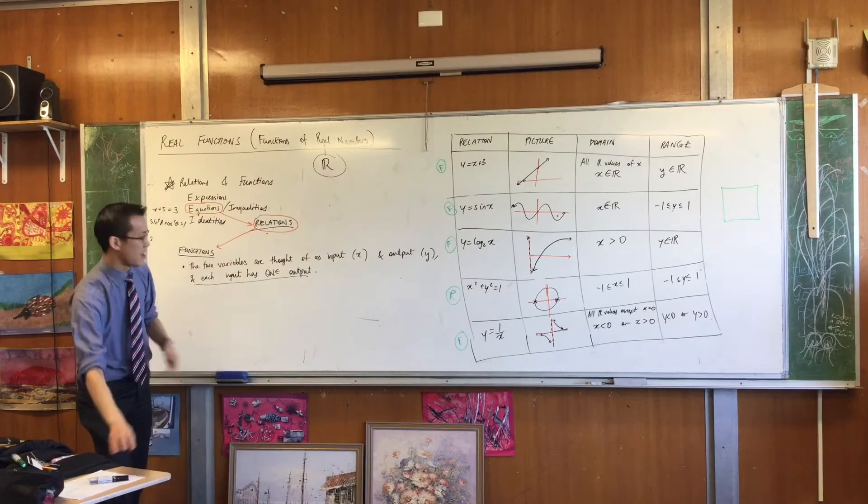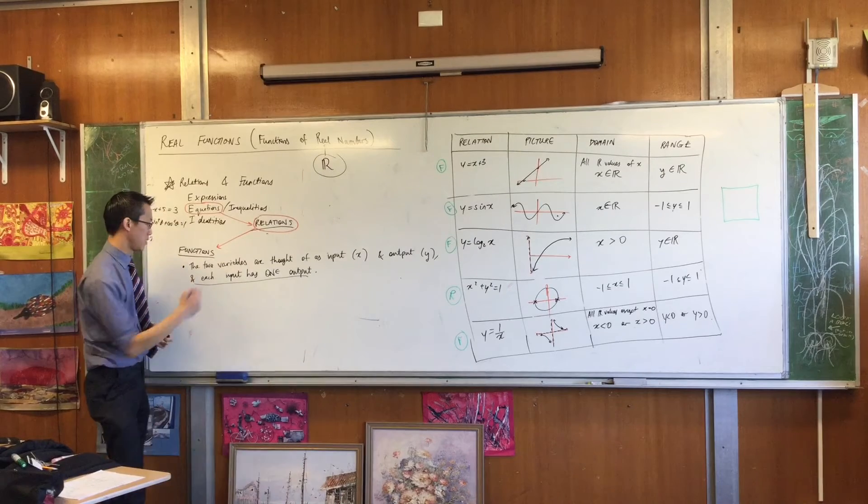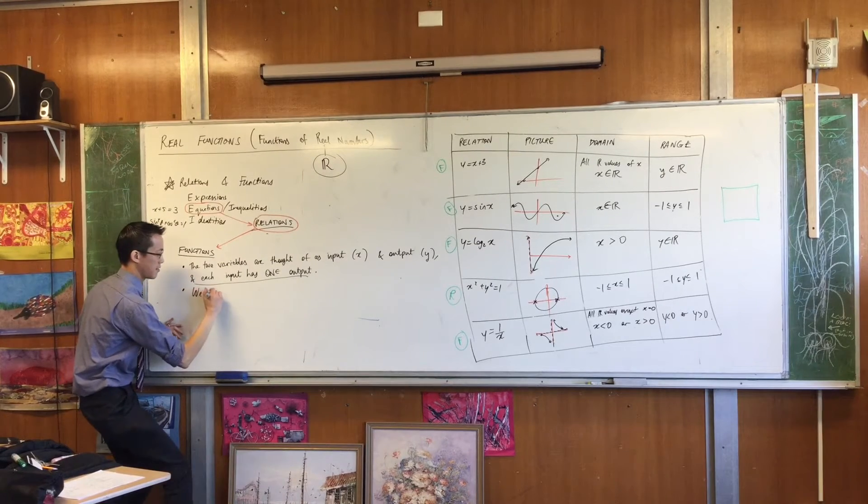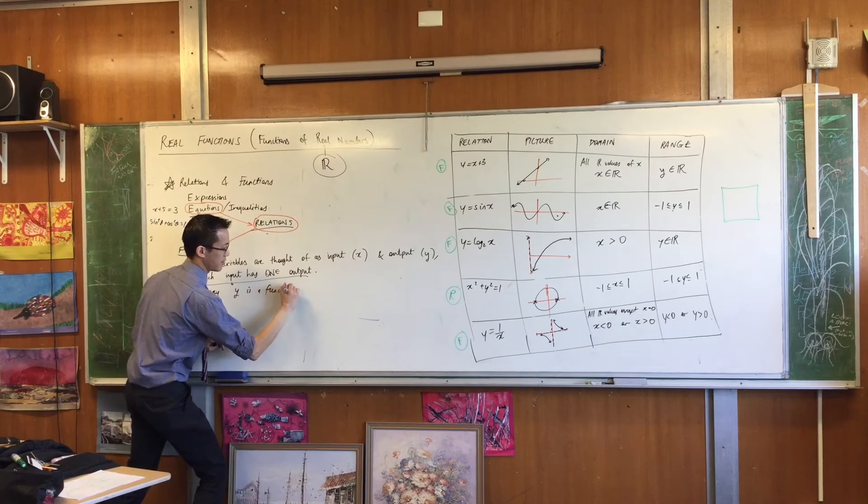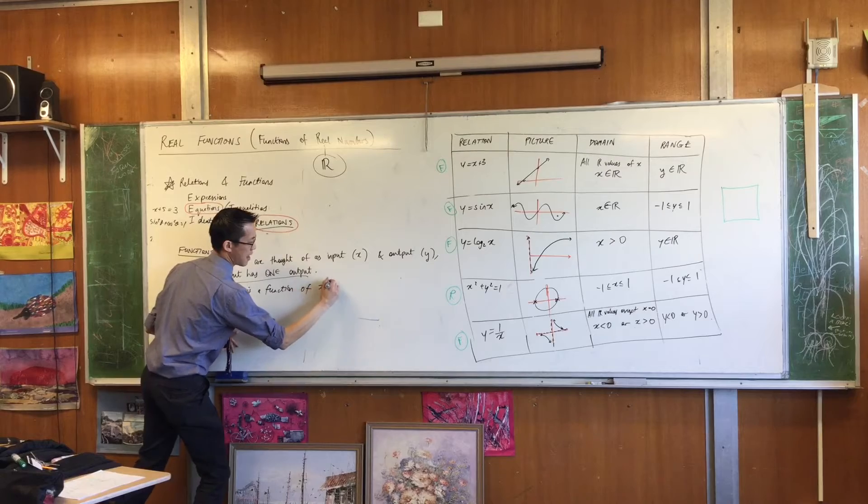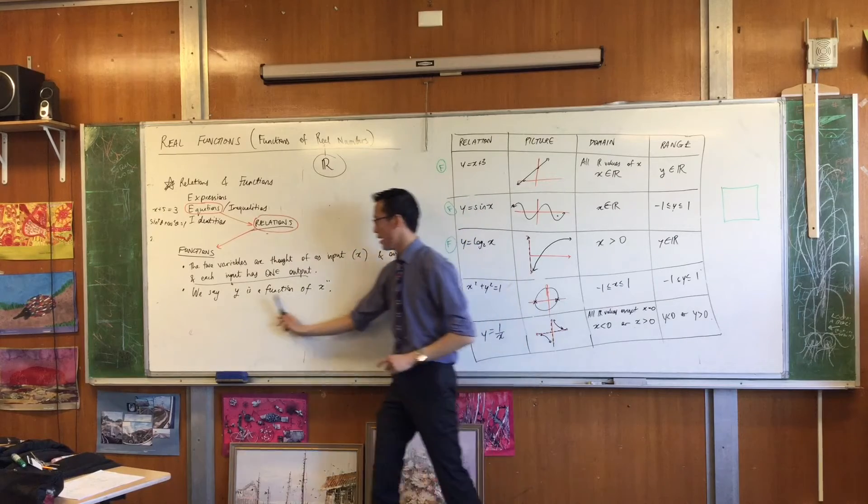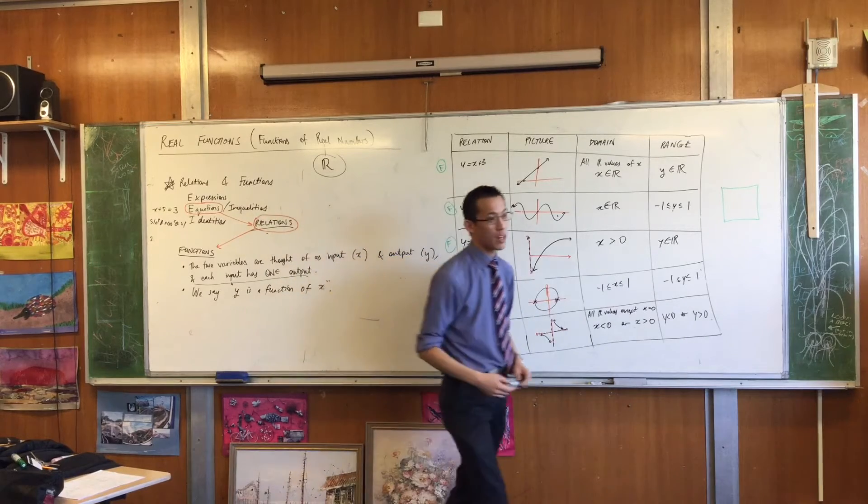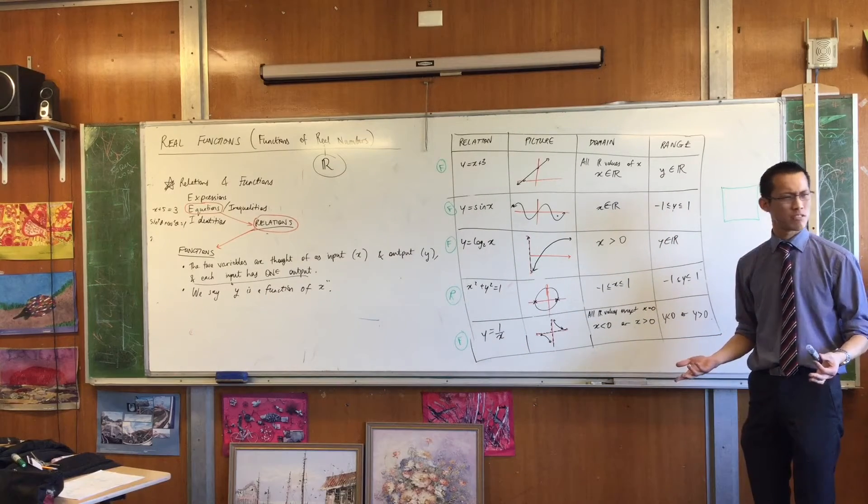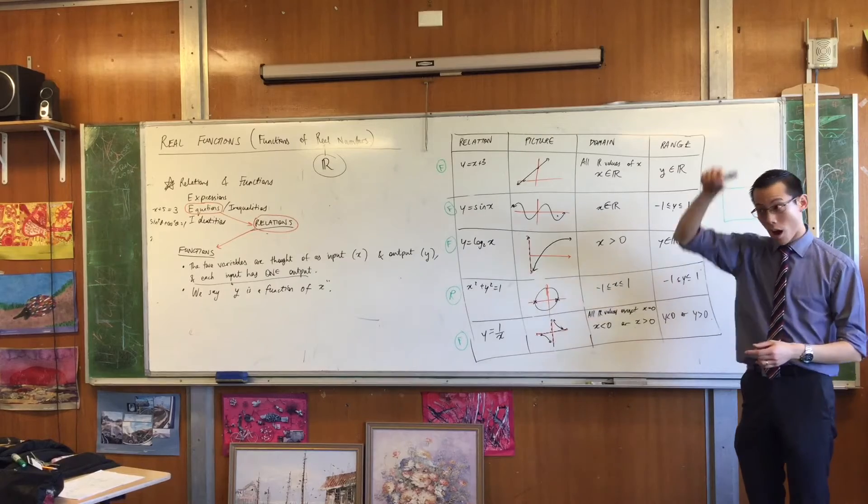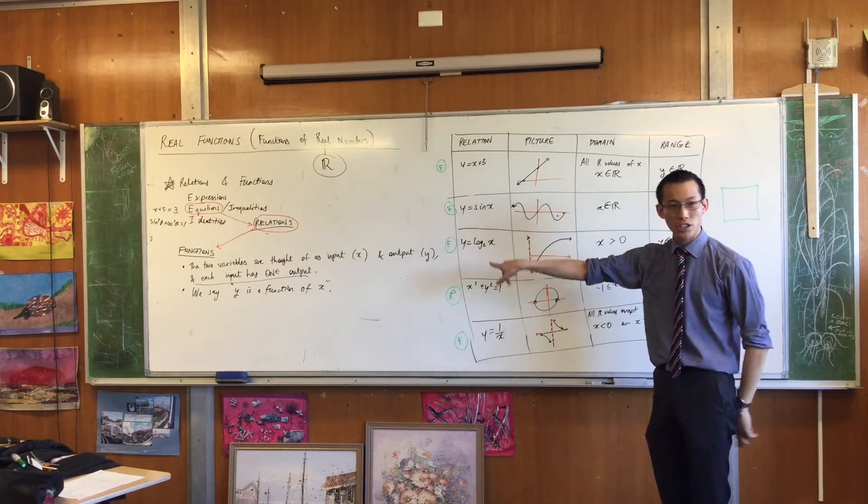So along with this idea here, where one is an input and one is an output, we introduce new language and new notation. So we say, y is a function of x. Here's your input, here's your output. You can say this in other ways too. You can say, temperature is a function of altitude. Does that make sense? If you know where you are, you can, with some certainty, work out what temperature you are. The higher you go, the colder it gets.